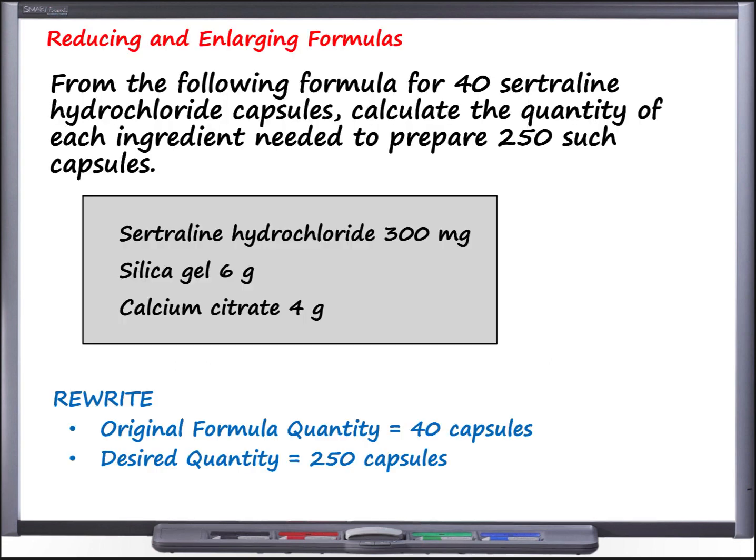Let's get started with our first question. From the following formula for 40 sertraline hydrochloride capsules, calculate the quantity of each ingredient needed to prepare 250 such capsules. Before we look at the formula, let's give a little background for sertraline. Sertraline is a selective serotonin reuptake inhibitor, often abbreviated SSRI. It's commonly used to treat depression and anxiety disorder in adults, and was actually the second SSRI to receive FDA approval for treating obsessive compulsive disorder, or OCD, in pediatric patients.